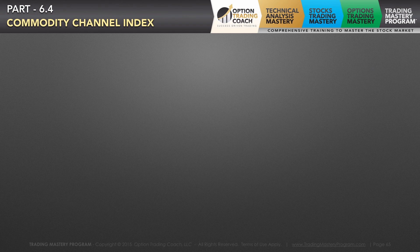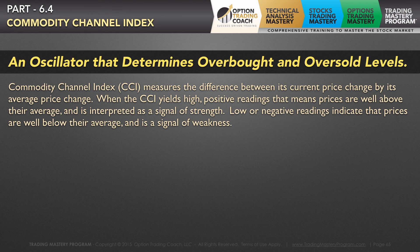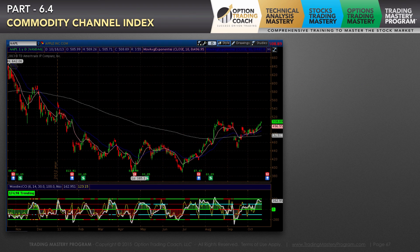The commodity channel index, also known as the CCI, measures the difference between its current price change and its average price change. When the CCI yields a high positive reading, that means prices are well above their average and it's interpreted as a signal of strength. When you have low or negative readings, that indicates prices are well below their average and it's a signal of weakness. The Woody CCI looks very similar to the regular CCI, except instead of using minus 100 and plus 100, the Woody CCI uses minus 200 and plus 200, while all other characteristics hold true.